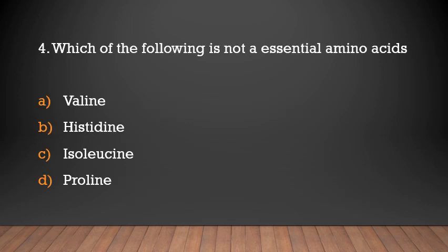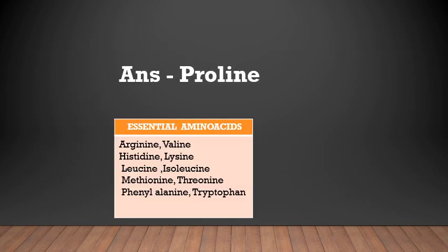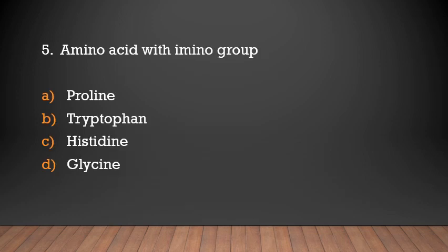Question: Which of the following is NOT an essential amino acid — valine, histidine, isoleucine, or proline? Answer: Proline. Essential amino acids are arginine, valine, histidine, lysine, leucine, isoleucine, methionine, threonine, phenylalanine, and tryptophan.